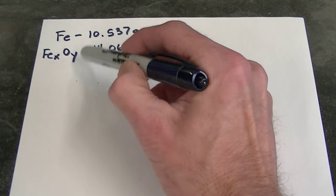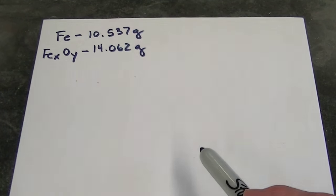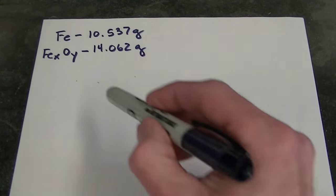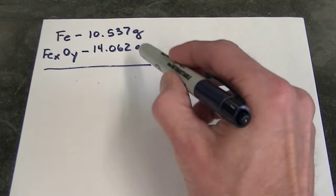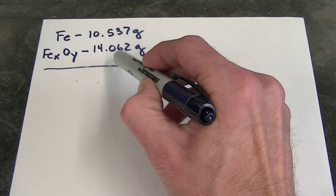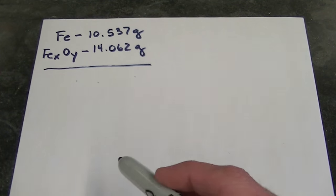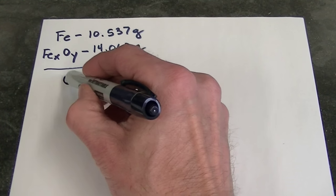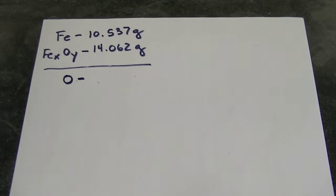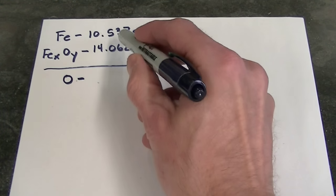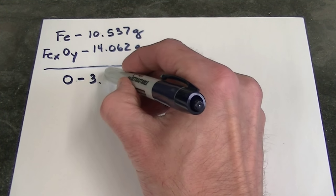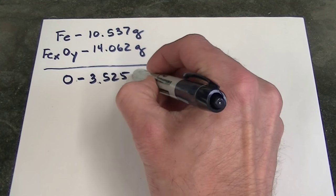Now the difference in this mass is simply the mass of the oxygen that was bound to the iron as a result of the reaction. So if I take 14.062 and subtract 10.537, I can find the mass of oxygen that's in the iron oxide. This minus this gives me 3.525 grams of oxygen.